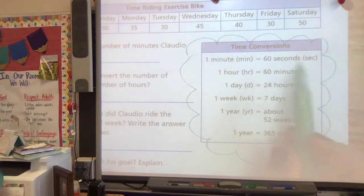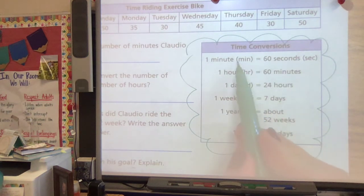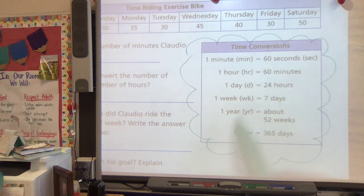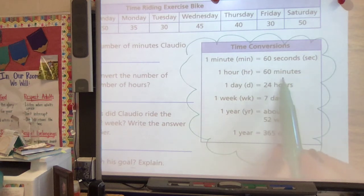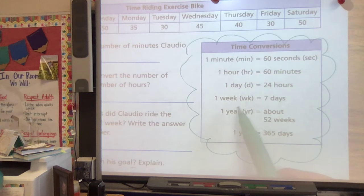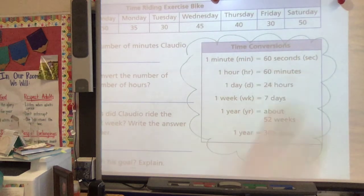But a minute is 60 seconds, and that's abbreviated in these ways. An hour is 60 minutes. A day is 24 hours. One week is 7 days. One year is about 52 weeks. It varies a little bit. And a year is 365 days. So we're going to use this to help us as we're solving these problems.